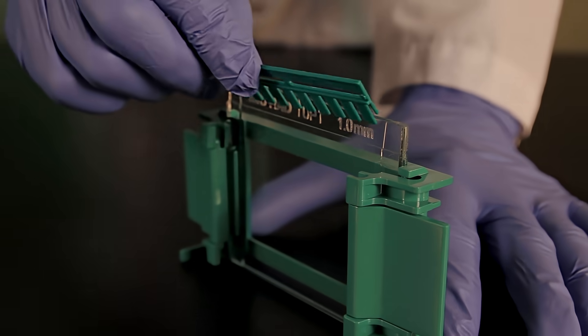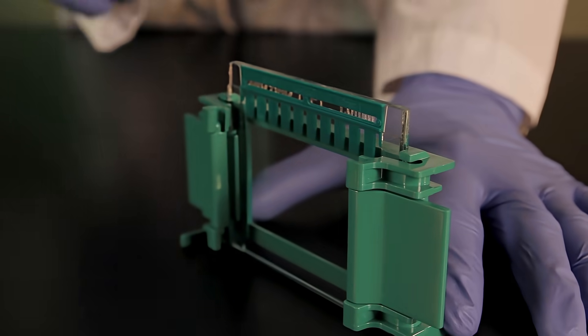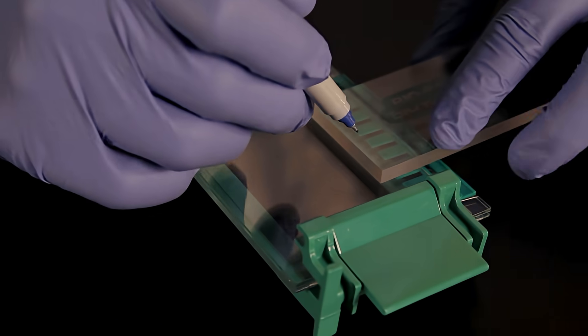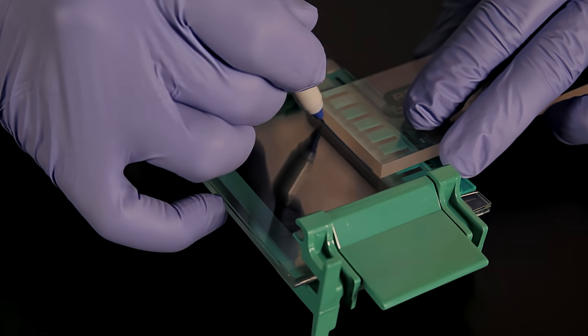Place the comb completely into the assembled gel cassette and mark the glass plate 0.5 cm below the teeth to indicate the level to which to pour the resolving gel.